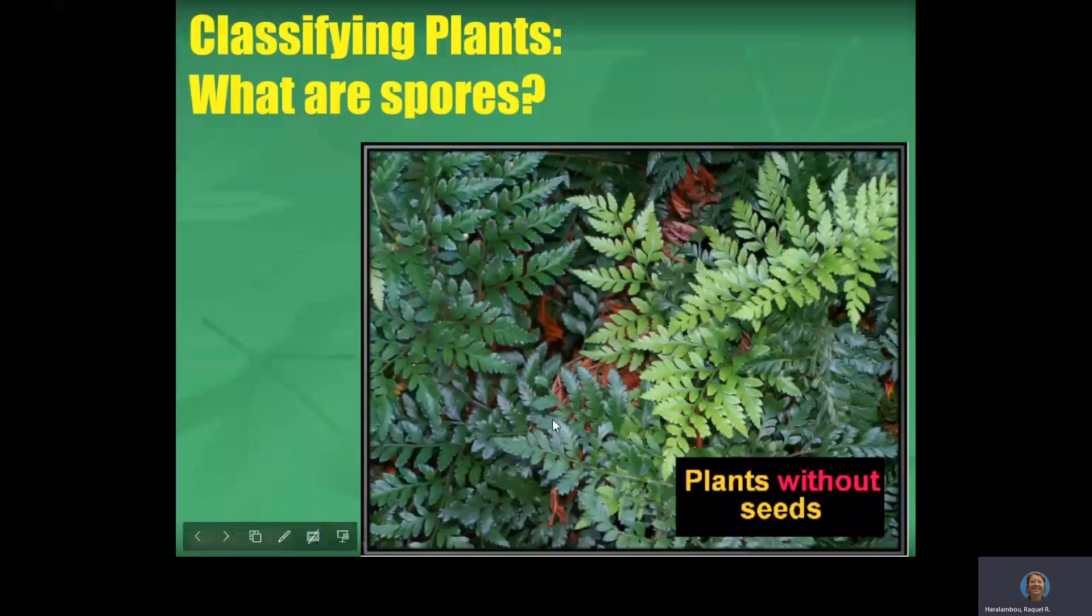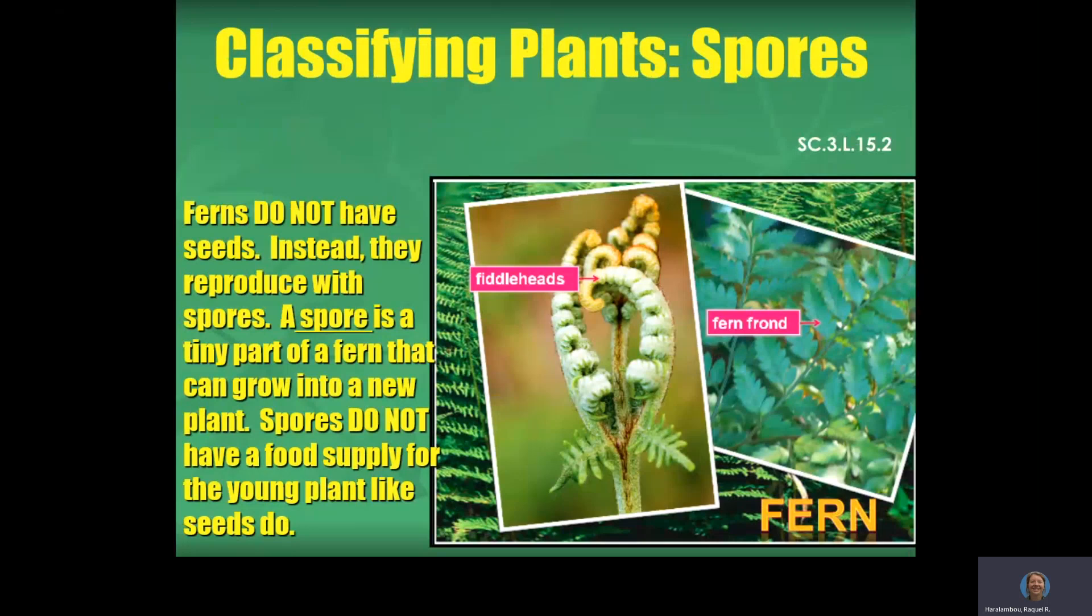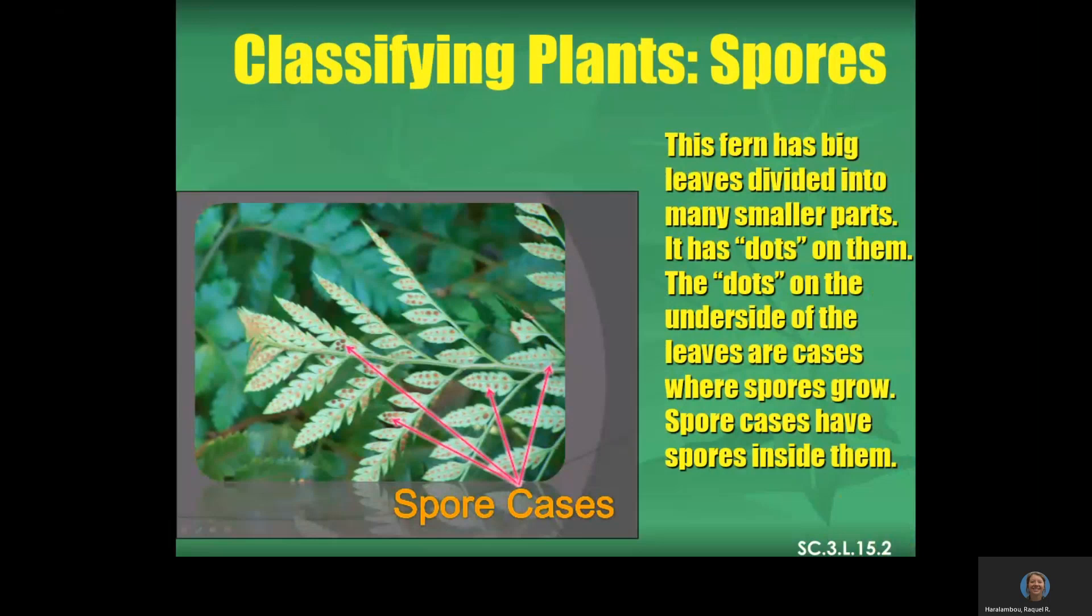So what are spores? We talked a little bit about this back in that picture with all the red dots. But let's dig a little bit deeper. What are spores? Ferns do not have seeds. Instead, they reproduce with spores. A spore is a tiny part of a fern that can grow into a new plant. Spores do not have a food supply for the young plant like seeds do. So they're not growing a bunch of food like a seed does. They're growing on the bottom of a plant to help it reproduce. This fern has big leaves divided into many smaller parts. It has dots on them. The dots on the underside of the leaves are cases where spores grow. Spore cases have spores inside of them. So they're right inside of there. All these little tiny red spots are going to be new plants.